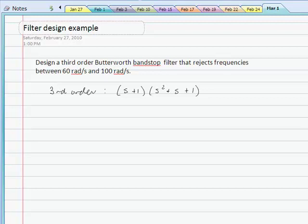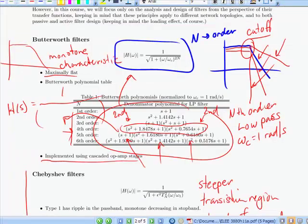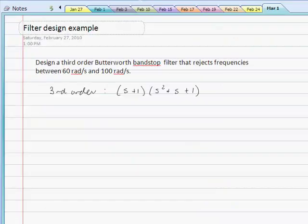So, first of all, we need to go back to our table of Butterworth polynomials, and we note that a third-order filter has this as its Butterworth polynomial. So that becomes the denominator of our transfer function.